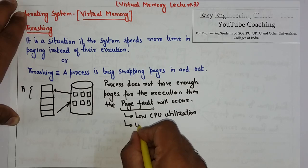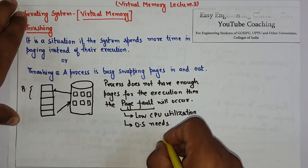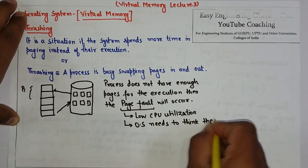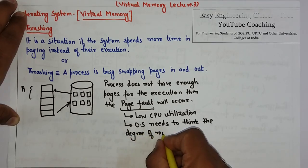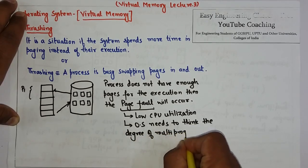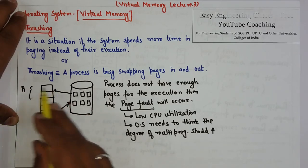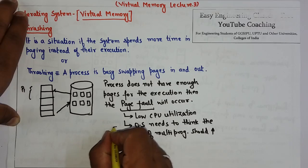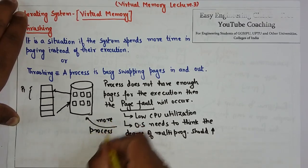Then the operating system needs to think that the degree of multiprogramming should be increased. That means the OS will start bringing more processes in the memory.